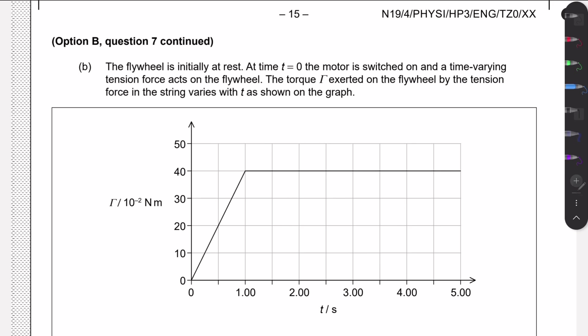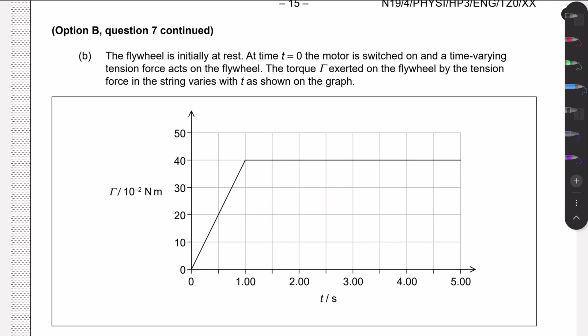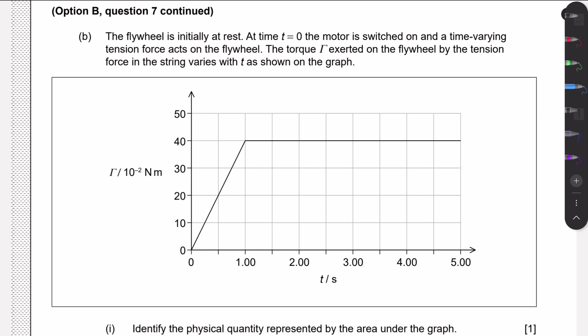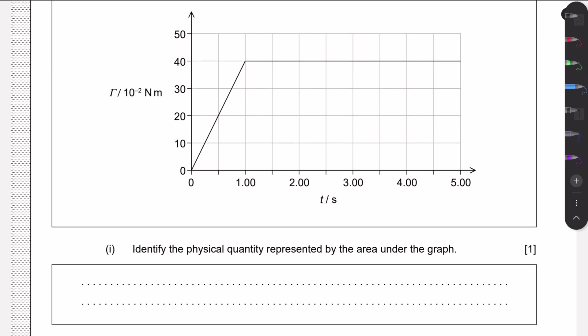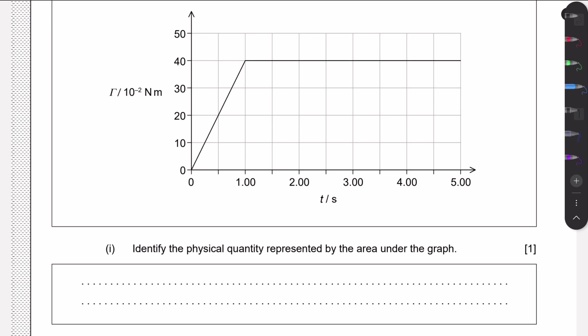Now we're given a graph. The flywheel is initially at rest; at time t = 0 the motor is turned on, and a time-varying tension force acts on the flywheel. This tension varies according to the graph — first linearly increasing, then constant.